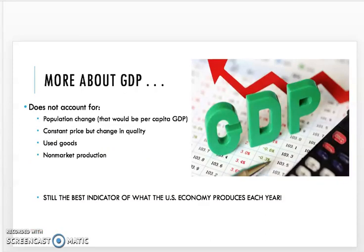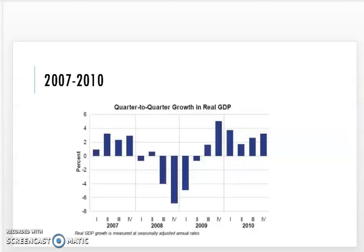GDP does not account for population changes — that's per capita GDP. The price may be constant, but there can be a change in quality: maybe the price stays the same but there's a smaller amount of chips in the bag, or it's made from cheaper materials like plastic instead of metal. It doesn't account for used goods, but it's still the best indicator of what the U.S. economy produces each year.